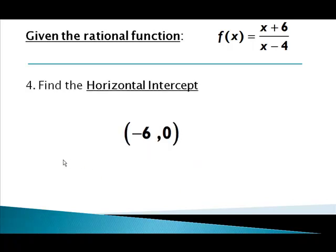Now typically I'm going to want to see the answer in the form of an ordered pair. So my input in this case was negative six, my output zero. What does this actually represent? This is the place on the graph where the curve will cross through the x-axis. So at negative six comma zero my curve will cross through the x-axis.